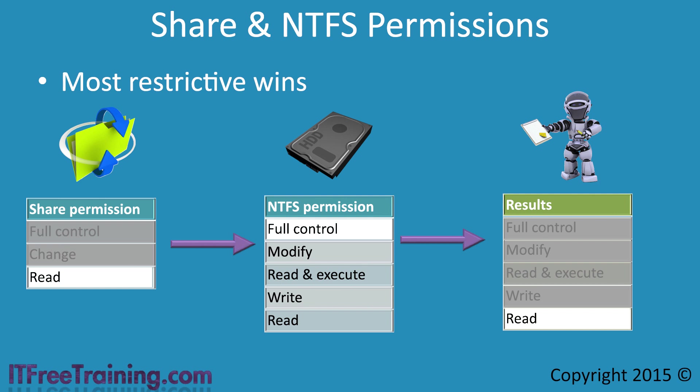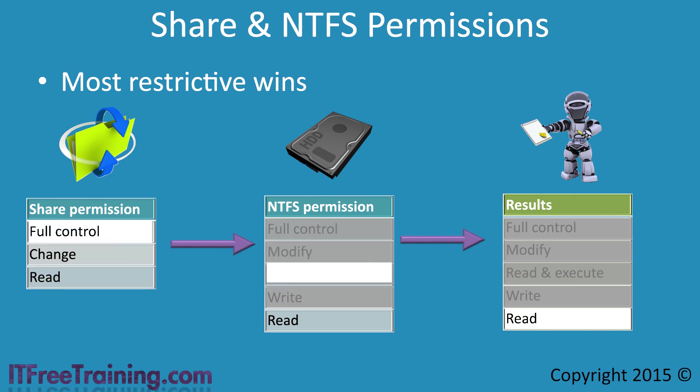Let's consider a different example. If the permissions were reversed, so the share had full control and the NTFS permission was set to read, notice the result is that the user will still be given read access only. The most restrictive permission was read in this case, so that is all the user will get.